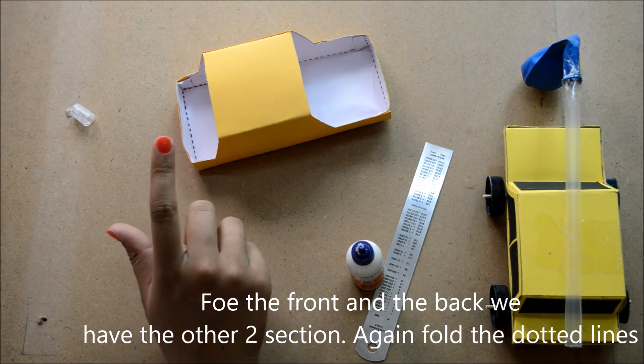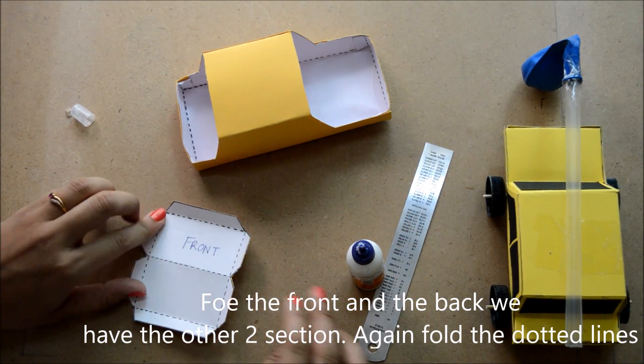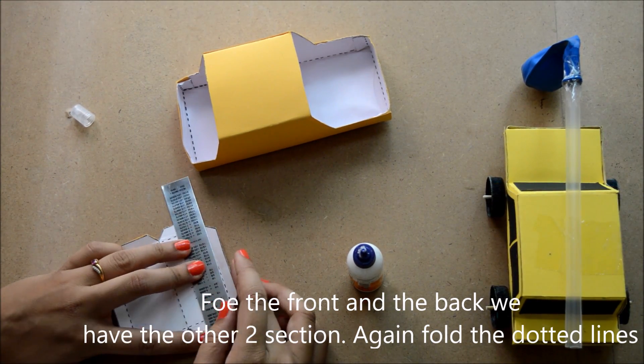And for the front and the back we have the other two sections. Again fold the dotted lines.